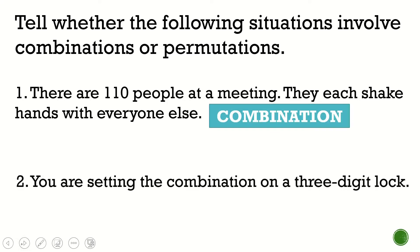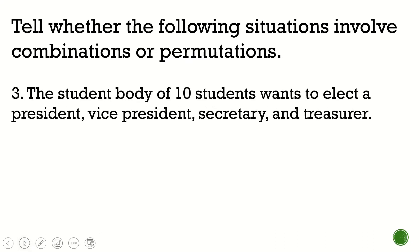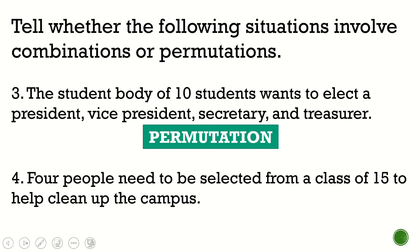How about this one? You are setting the combination — although you see the word 'combination' here — on a three-digit lock. Let's say 3, 2, 1. Is it different from 1, 2, 3? When we talk about a passcode or three-digit lock, are those two different? Yes, they are different. So therefore, we're talking about permutation. The third example is also permutation. The fourth one is combination because those four people don't need to be arranged.